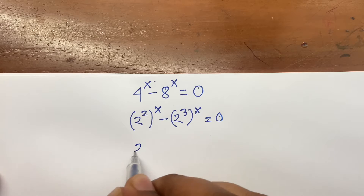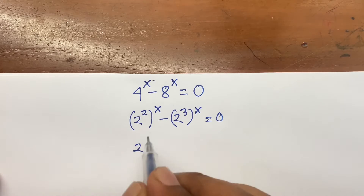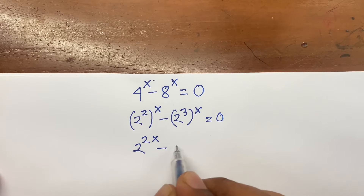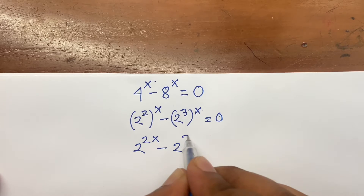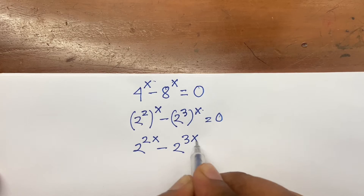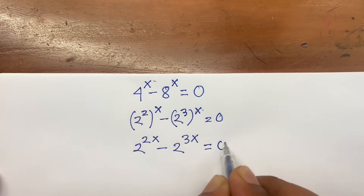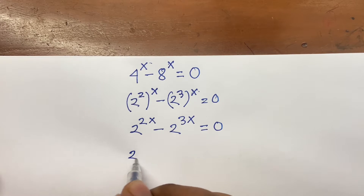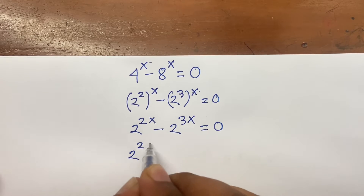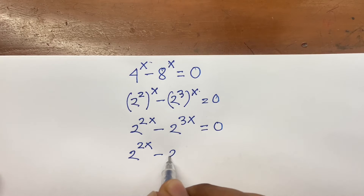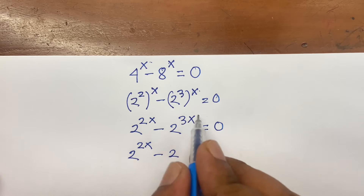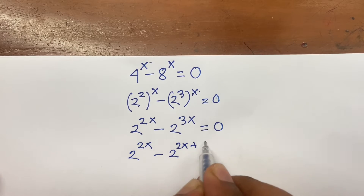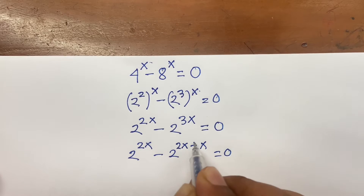Then, here is 2 to the power 2 times x — that is 2x — minus 2 to the power 3 times x — that is 3x — is equal to 0. So here is 2 to the power 2x minus 2 to the power 3x, which is the same as 2x plus x, is equal to 0.